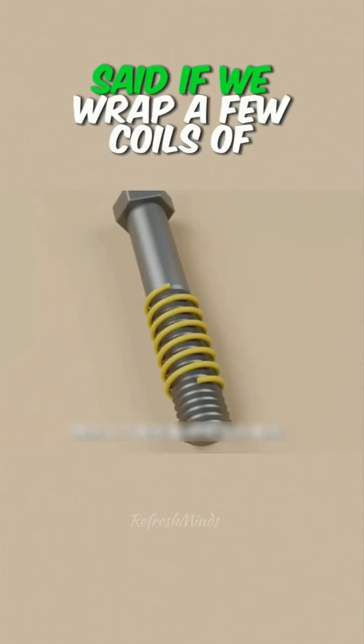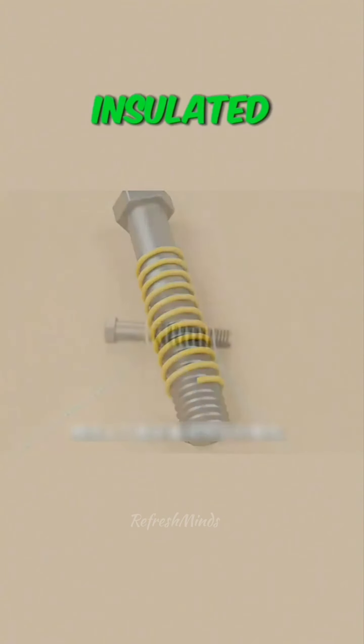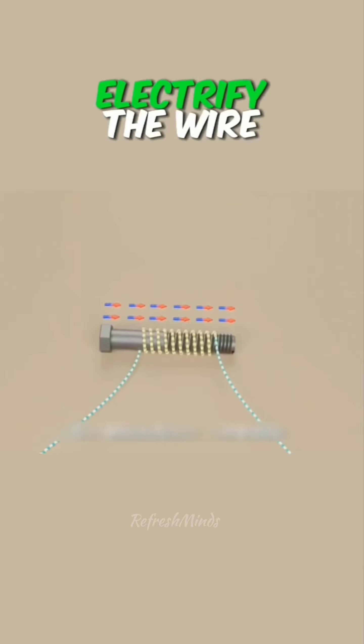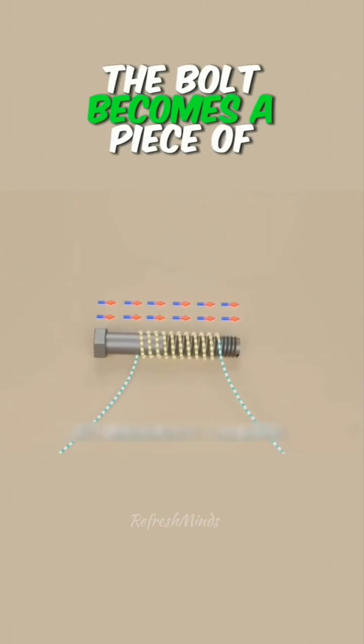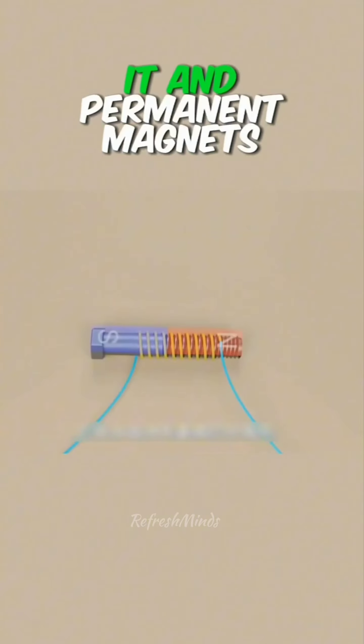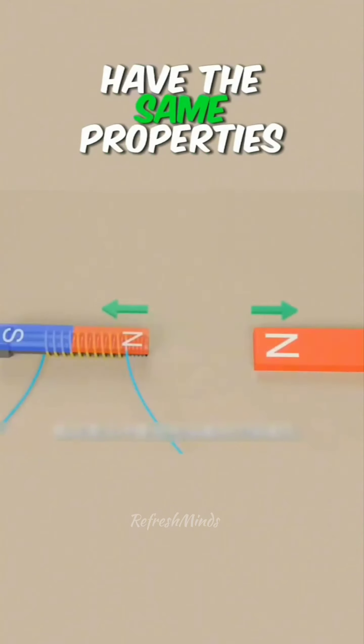Before we talk about brush motors, if we wrap a few coils of insulated wire on a metal bolt and then electrify the wire, the bolt becomes a piece of electromagnet. It and permanent magnets have the same properties.